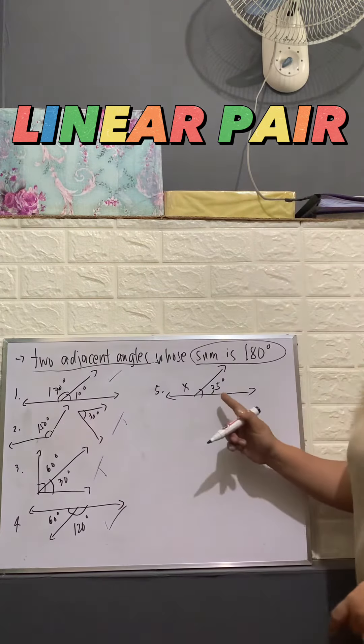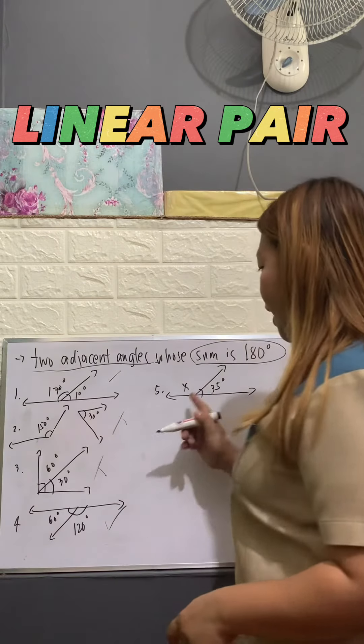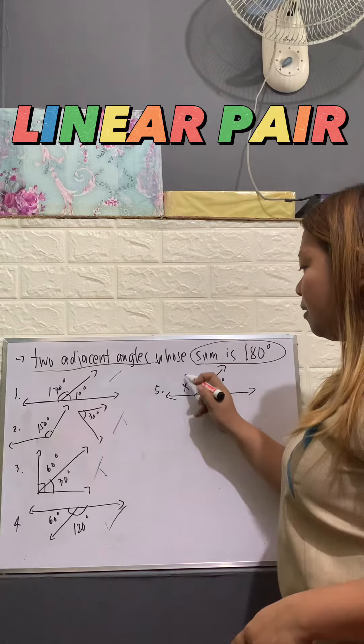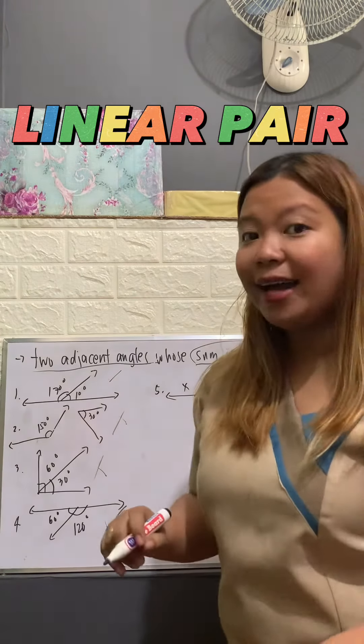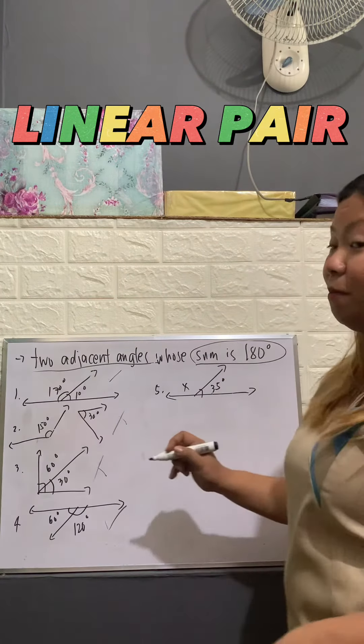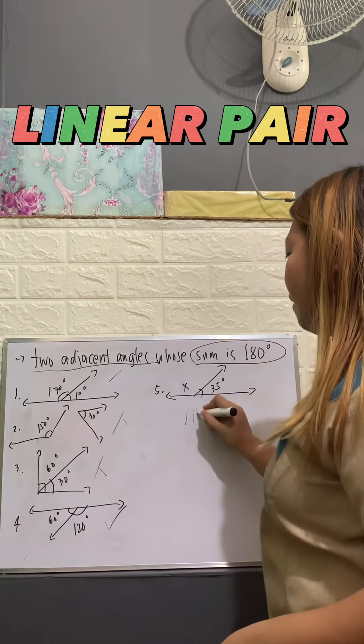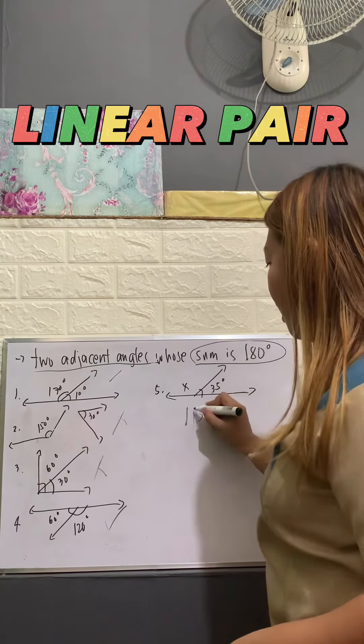Now, if you have here linear pair, and the other one is 35 degrees, what will be the measurement of our other angle? So that will be 145 degrees, correct? That's 145 degrees.